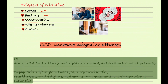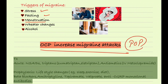Weather changes and alcohol such as wine are also trigger factors for migraine. An important clinical point is that oral contraceptive pills (OCPs) increase migraine attacks. Women who have a history of migraine should avoid OCPs and should prefer taking progesterone-only pills instead, because OCPs are related to increased attacks of migraine.